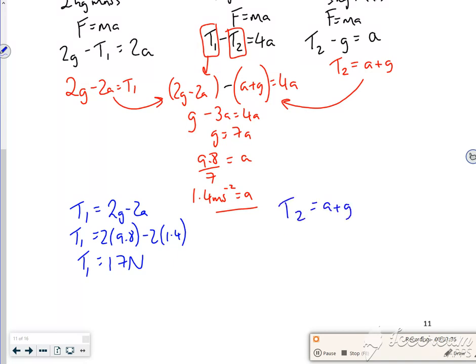So T2, we said was a plus g. So T2 is now 1.4 plus 9.8. Which is roughly 11.2. But 2 sig fig says 11.